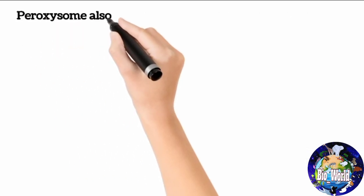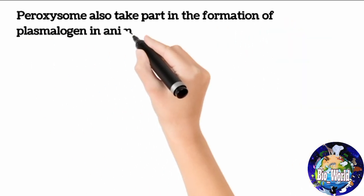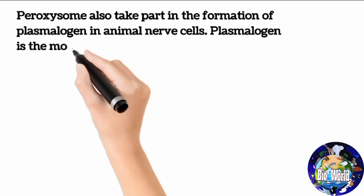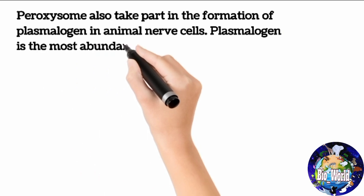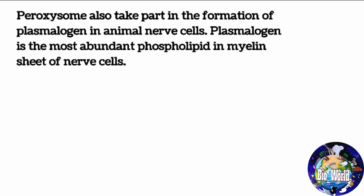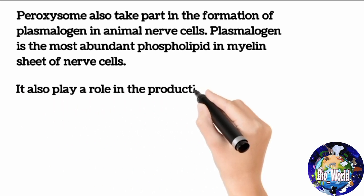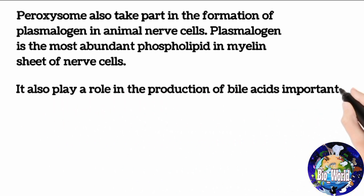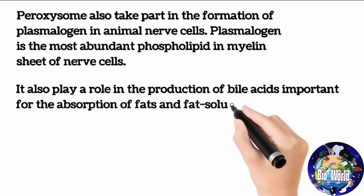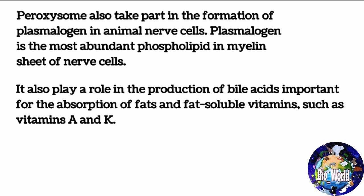Peroxisomes also take part in the formation of plasmalogen in animal nerve cells. Plasmalogen is the most abundant phospholipid in the myelin sheath of nerve cells. Peroxisomes also play a role in the production of bile acids, important for the absorption of fats and fat-soluble vitamins such as vitamins A and K.